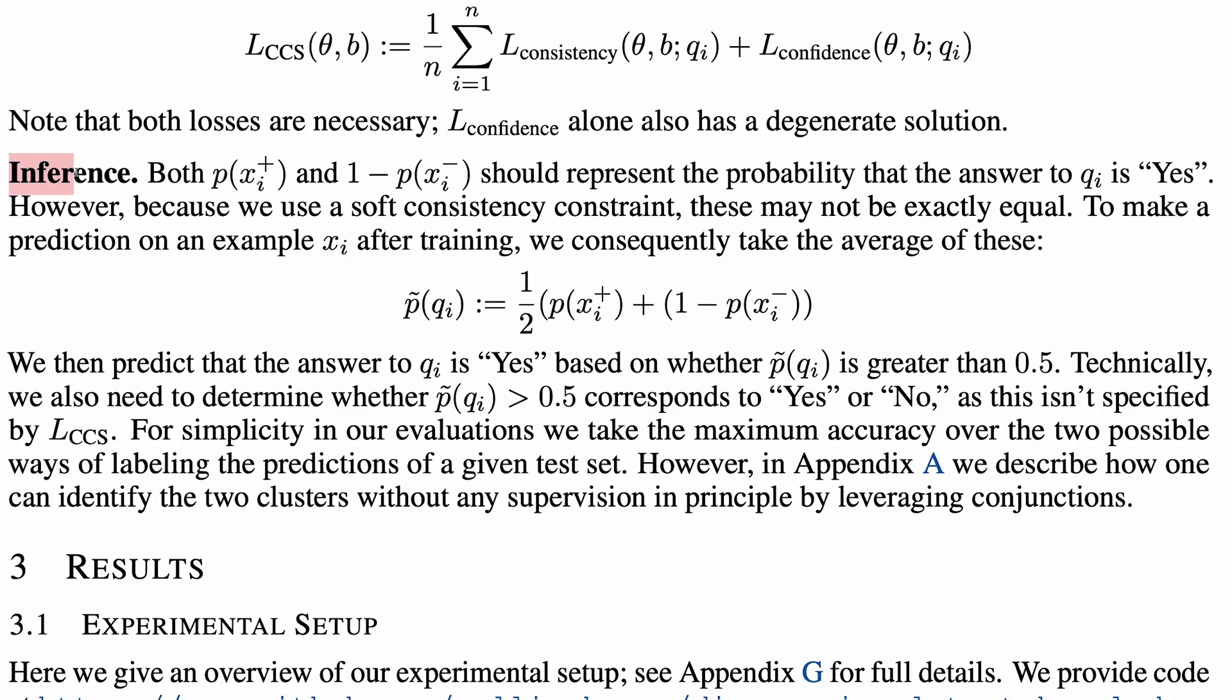When it comes to inference, in principle, both p of xi plus and one minus p of xi minus should represent the probability that the answer to question qi is yes. But since we've only used a soft consistency constraint in the form of a loss, they are not likely to be exactly equal. So the authors simply take the average of these. This is the term we saw earlier.